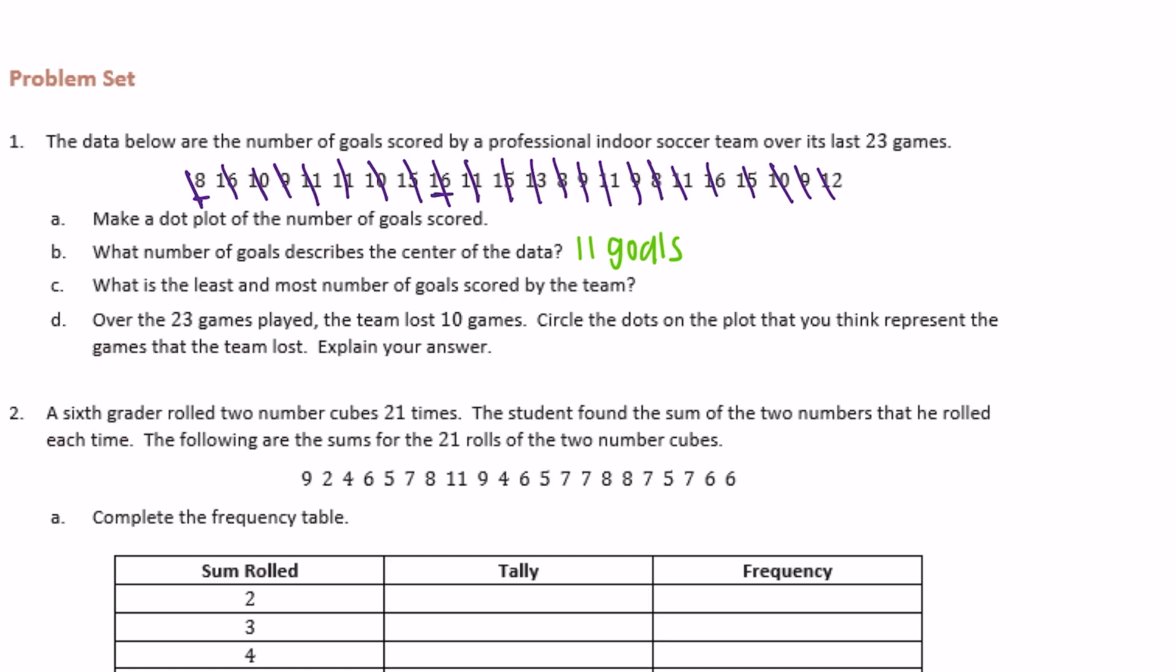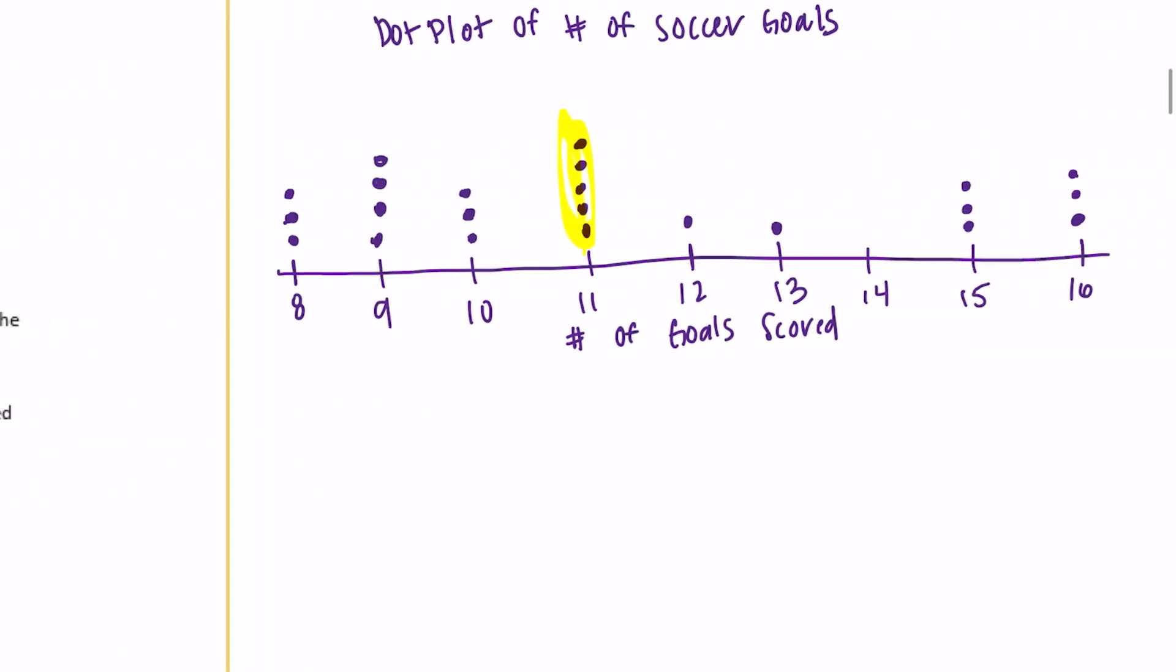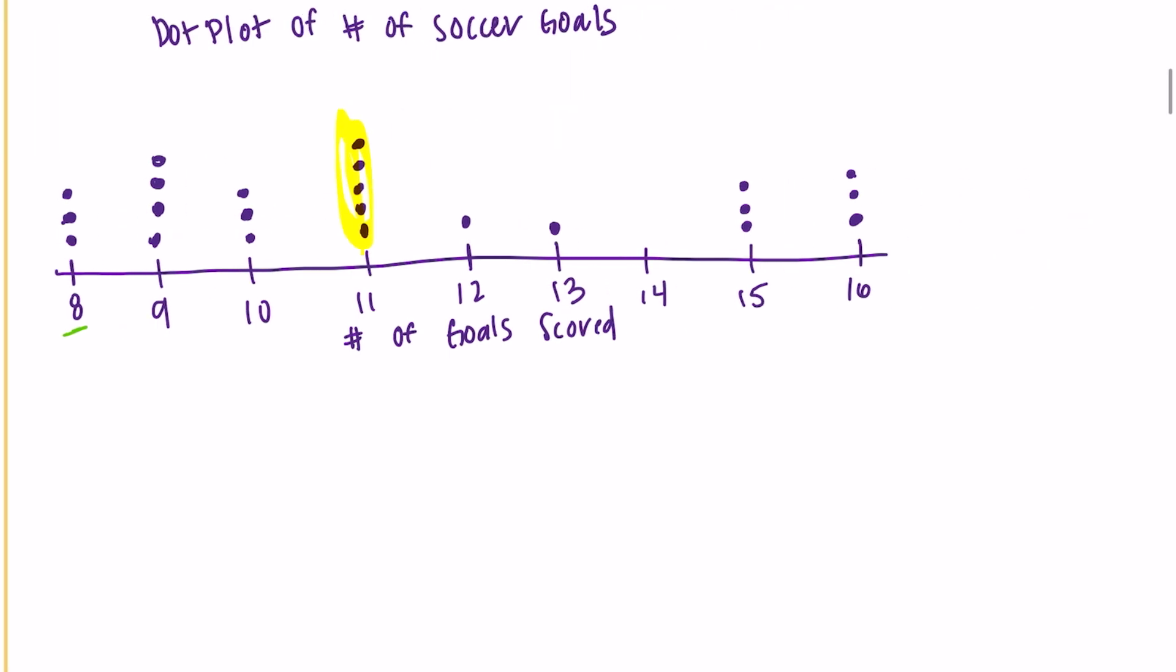What is the least and most number of goals scored by the team? So the least was 8 and the most was 16.